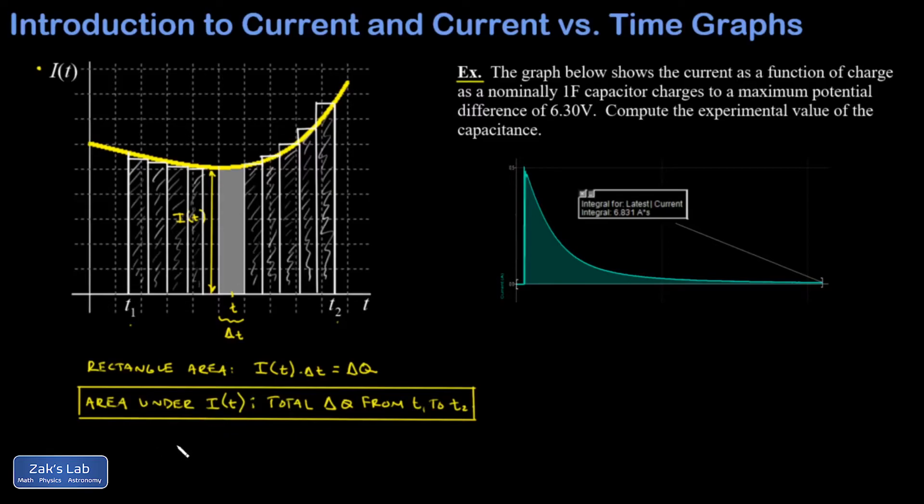For those of you with a little bit of calculus background, I could write this as an integral. So I could say the total charge flow would be the integral from T1 to T2 of I of T dT. All right, let's wrap things up with an example.